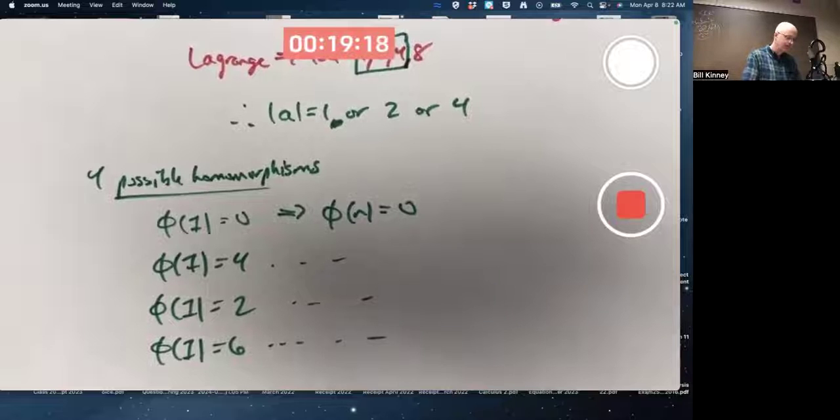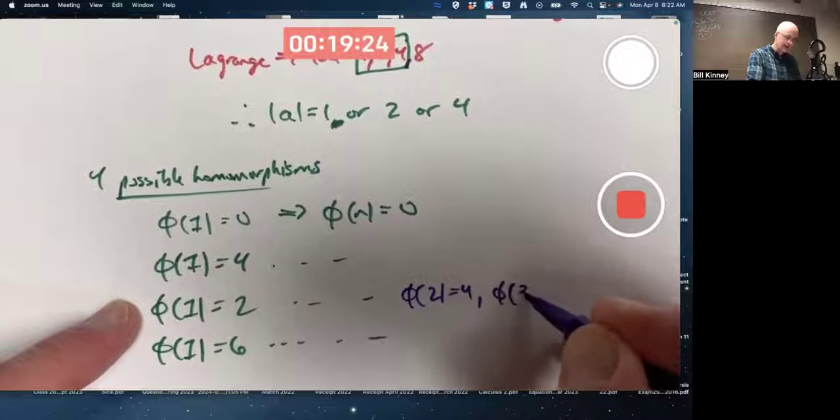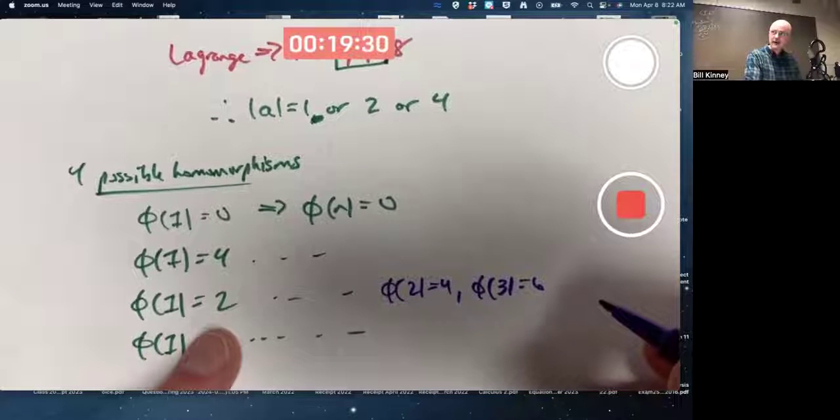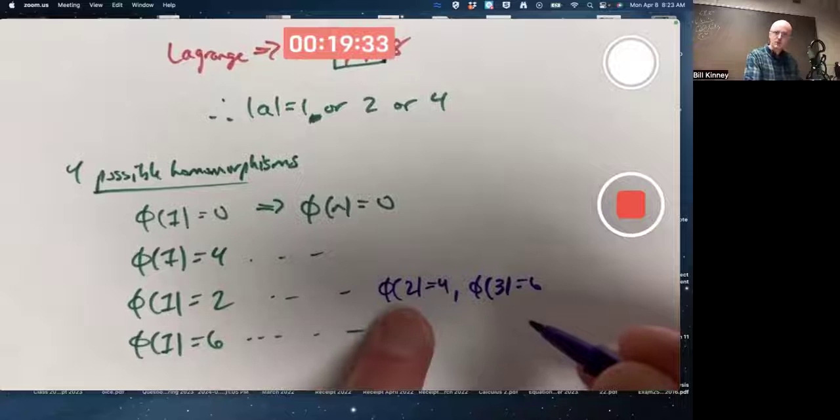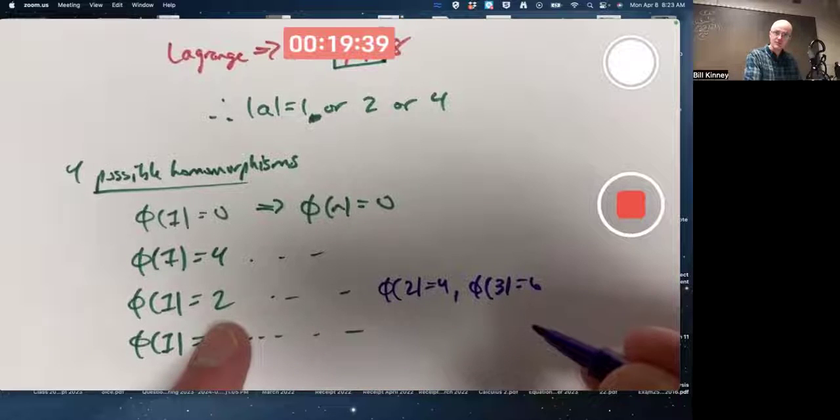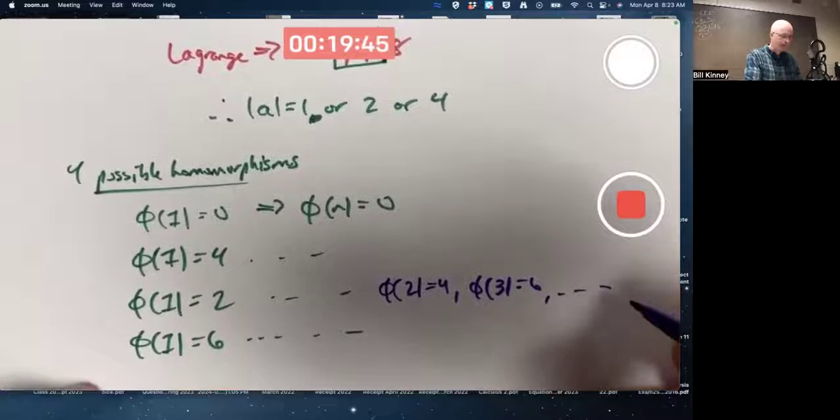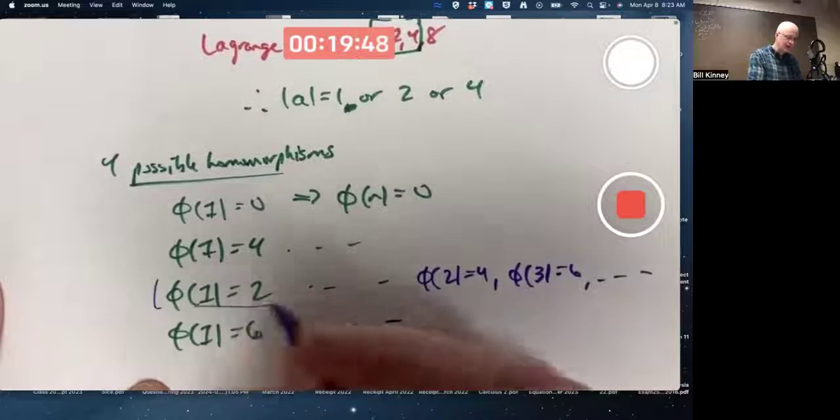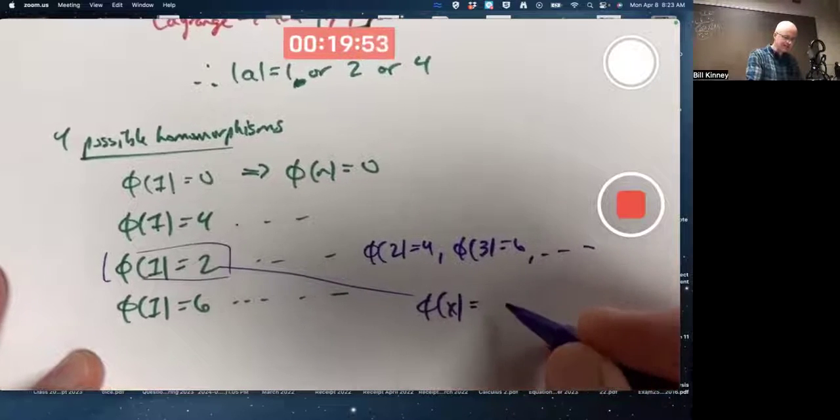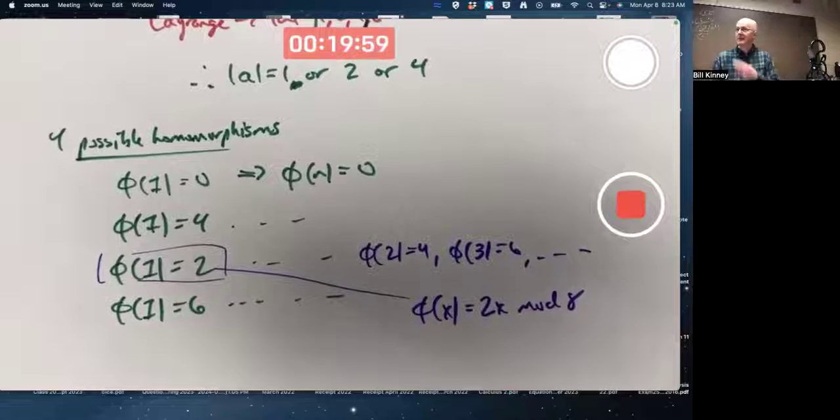For example, if one gets mapped to two, then two is going to get mapped to four and three is going to get mapped to six. I'm using the fact that this would have to be operation preserving. Two is one plus one. So phi of two would have to be phi of one plus phi of one, which is two plus two or four. You could write the formula for this one. There is a formula. As in general, phi of X is two X mod eight. That would be a formula for that particular homomorphism.